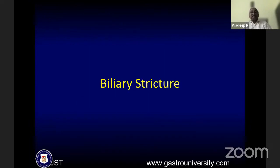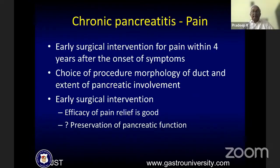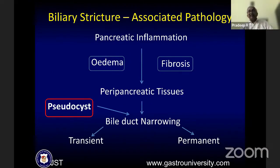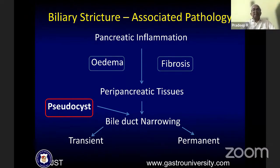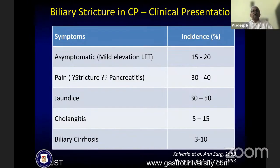Turning to biliary stricture — pancreatic inflammation around the pancreas can lead to edema or fibrosis causing bile duct narrowing. This can be transient or permanent, or an associated pseudocyst can produce extrinsic compression of the biliary duct system. Patients most often are asymptomatic, but the stricture can present as jaundice, cholangitis, or if improperly treated, as biliary cirrhosis.